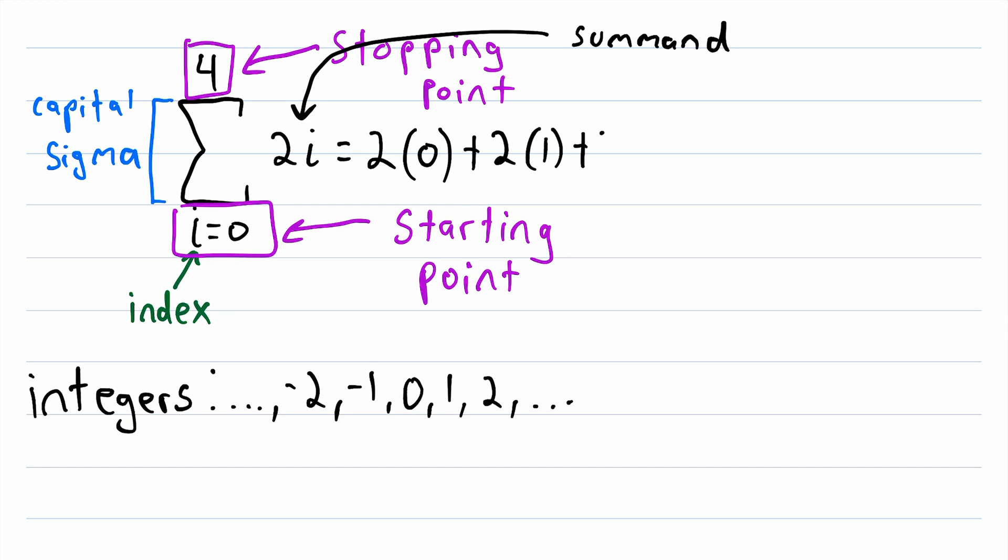Then, increment i up again, so we have two times two. Increment i up again, we have two times three. And then, increment i up again, we have two times four. And this is where we stop, because four is the stopping point.